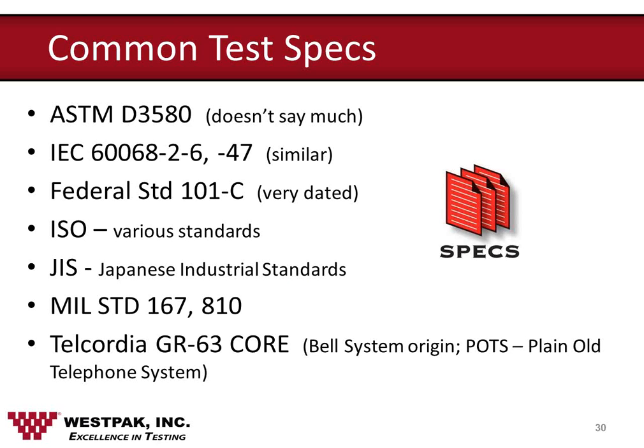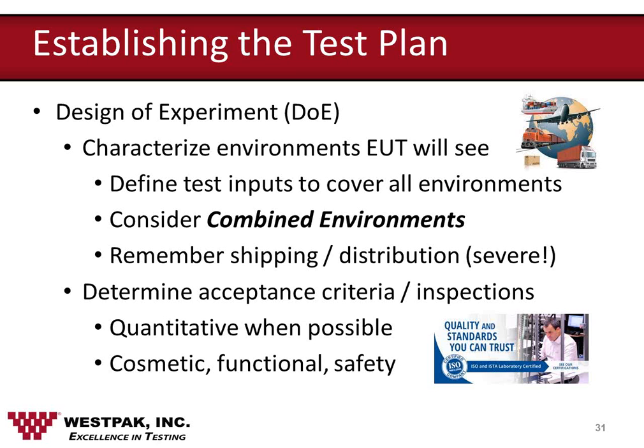This is a list of common test procedures we see very often in the laboratory for product reliability testing as well as testing for the distribution environment. Most test specifications are adaptations of these procedures. The most popular is ASTM D3580, which is a very commonly used procedure. The IEC 60068-2-6 and IEC 60068-2-47 are also widely utilized. Federal Standard 101 is a dated standard but still has some value. If you're involved in telecommunications work, you'll be very familiar with the Telcordia GR-63 Core, which began its life as a Bell system operating test spec.